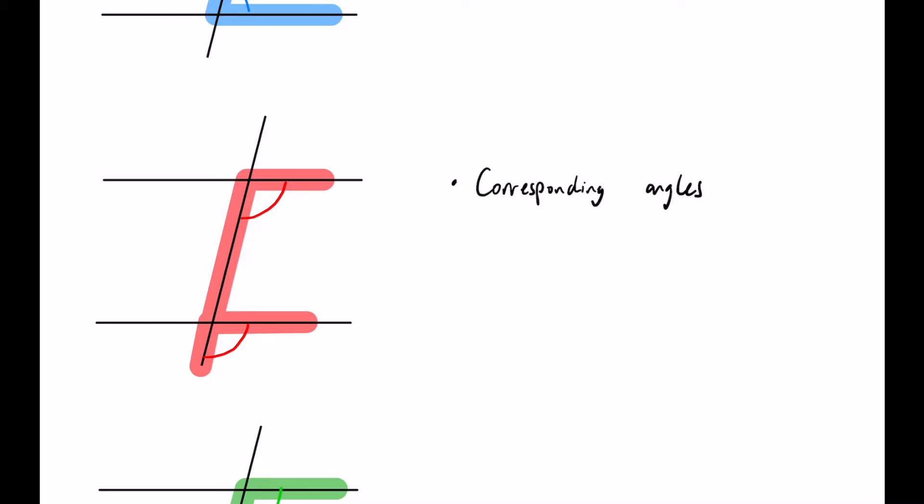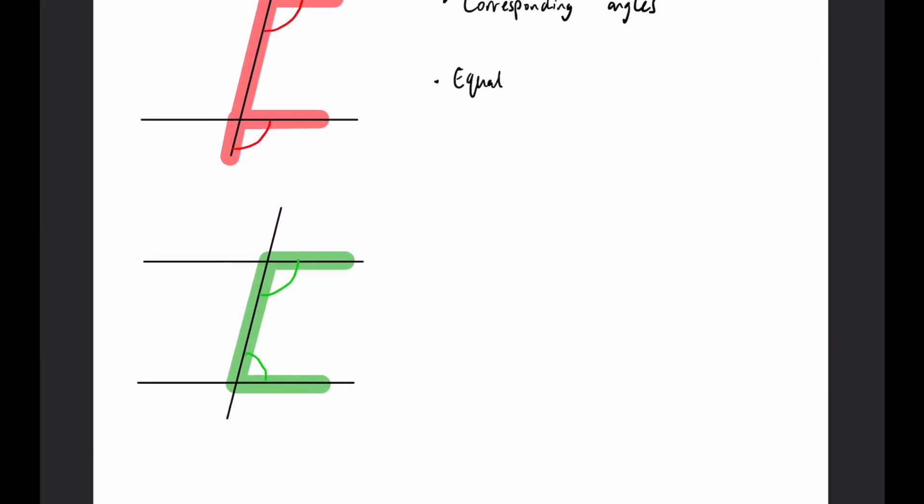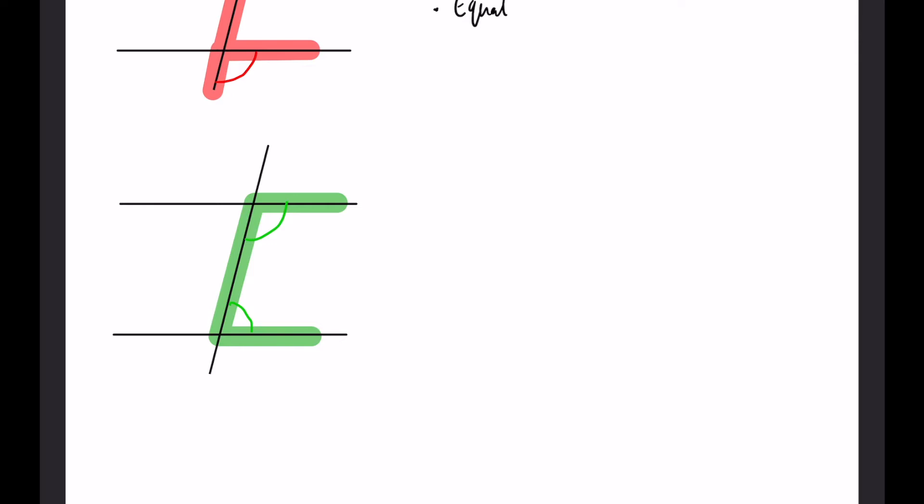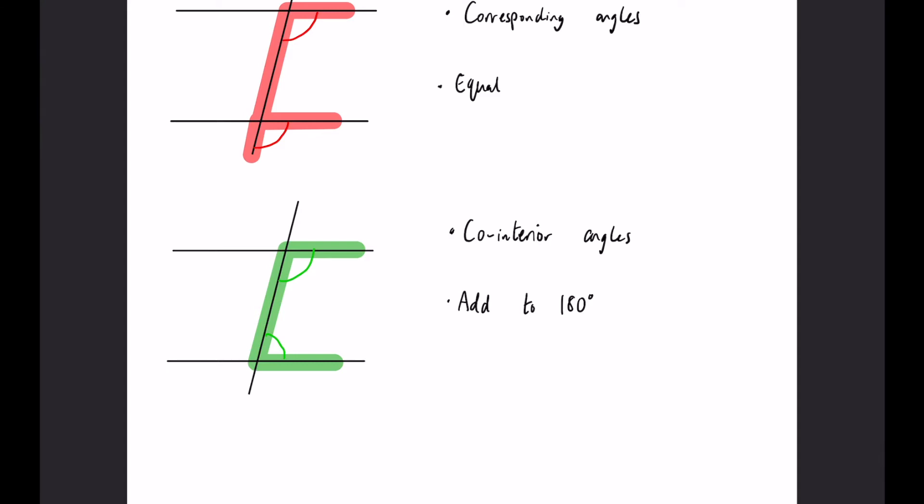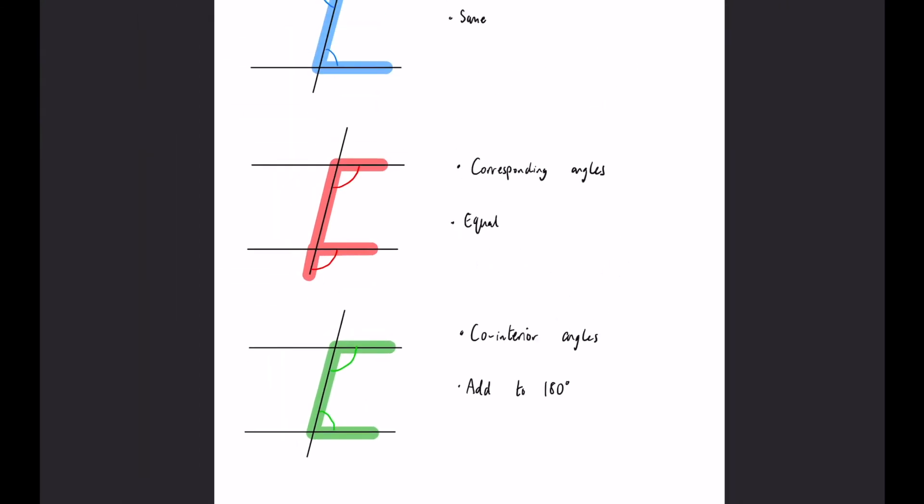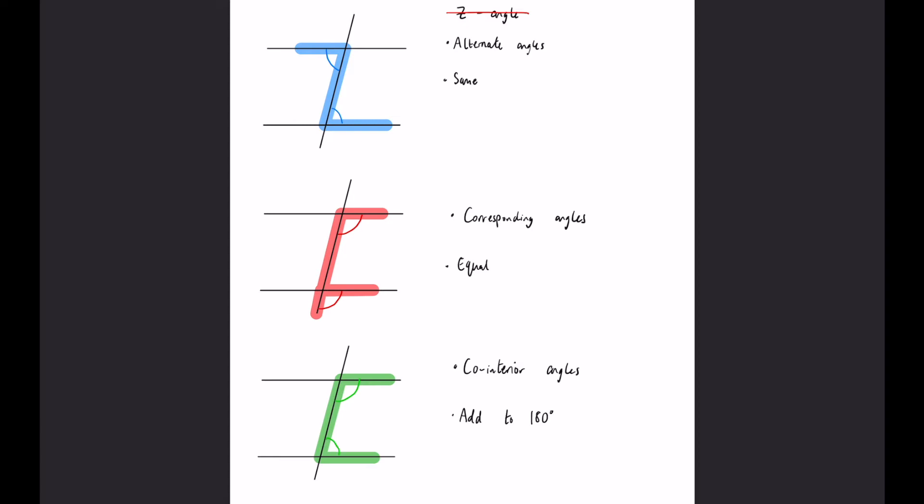Finally we have the co-interior angles or the C angles. Again, we want to use co-interior. And unlike the other two, these two aren't actually the same. These two add together to make 180 degrees, so very similar to how a triangle or a straight line works. And as long as you can remember these three, then you'll be completely fine with all of these topics.